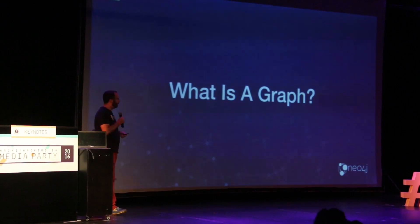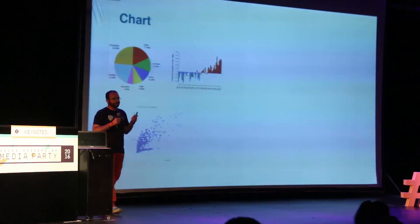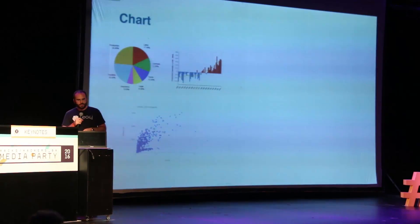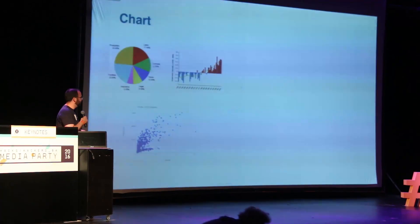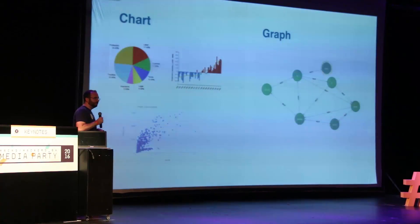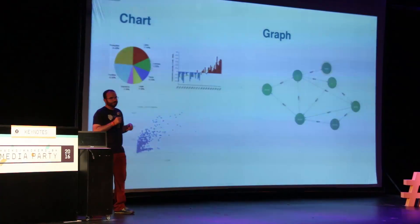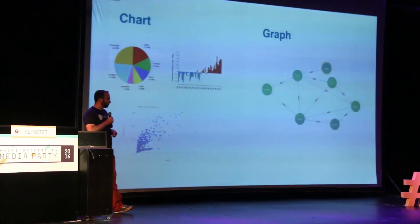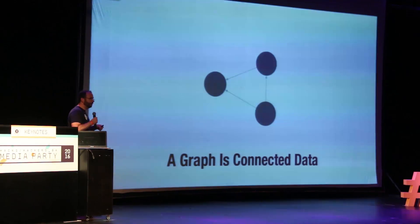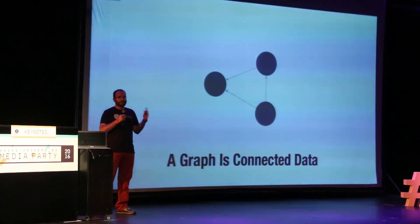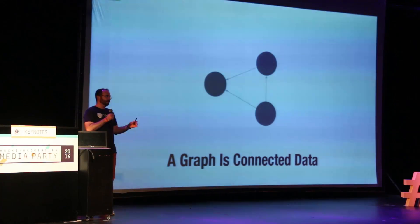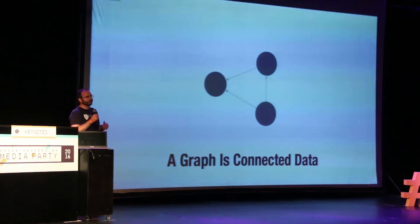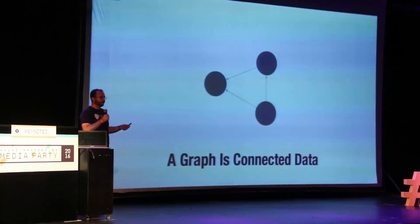So what is a graph? We're not talking about charts — not a line chart or a bar chart. Instead, what I'm talking about is a data structure of connected data. When we say connected data, we're talking about nodes, which are the entities or objects in the graph, and relationships, which are the things that connect or link the nodes.